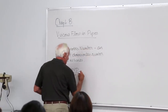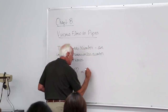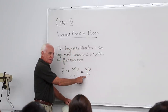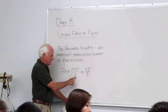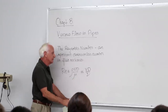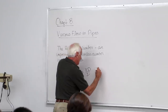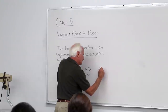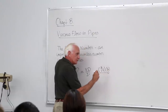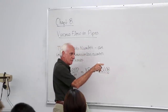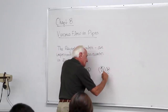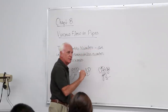You can rewrite the Reynolds number as VD over nu, because kinematic viscosity nu is equal to absolute viscosity divided by density — from chapter one. With velocity in feet per second, diameter in feet, and kinematic viscosity in feet squared per second, all the units cancel out, confirming it's dimensionless.